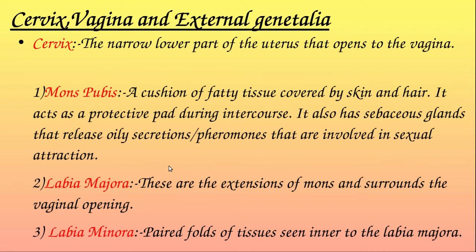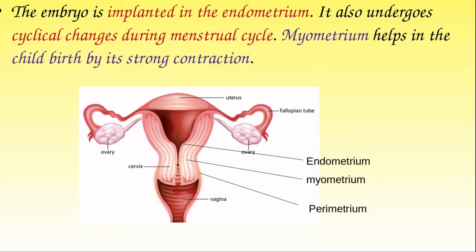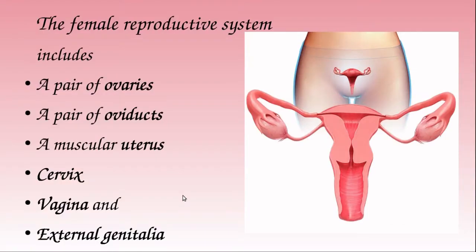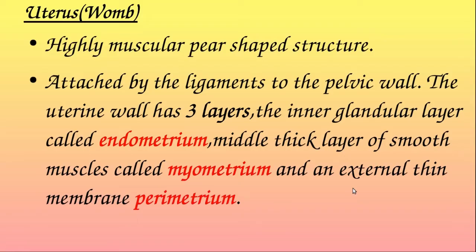The cervix is the narrow lower part of the uterus that opens into the vagina. It has an opening called the cervical orifice, and the cervix opens into the vaginal tube.